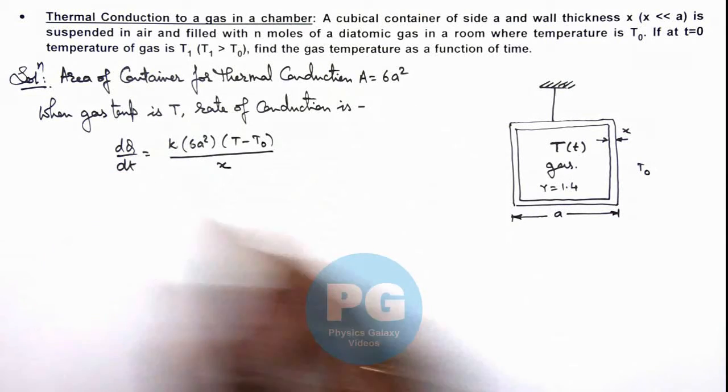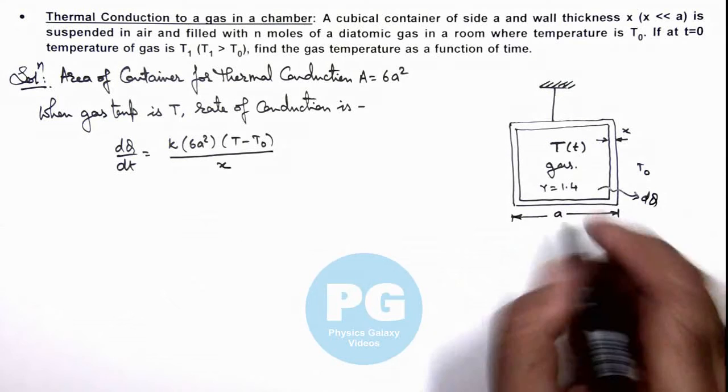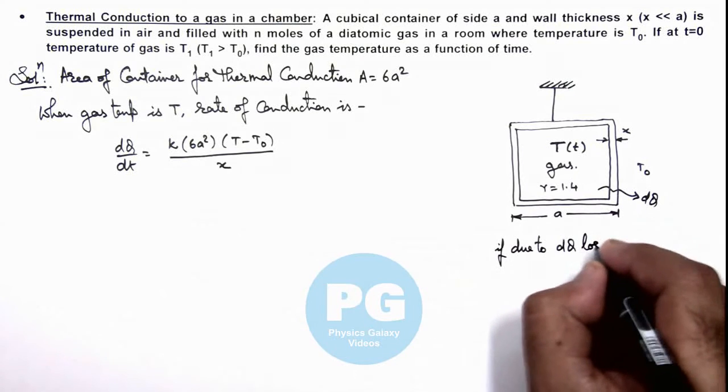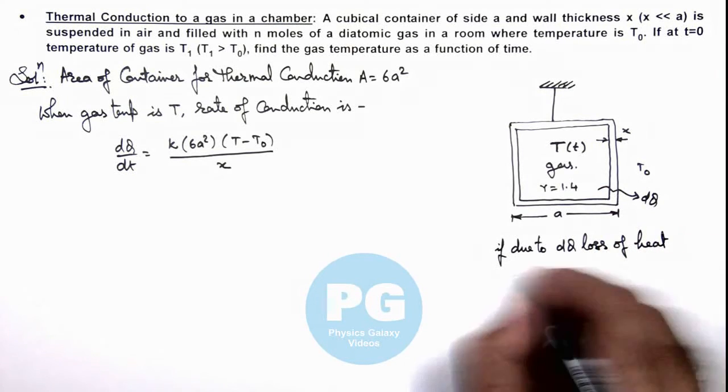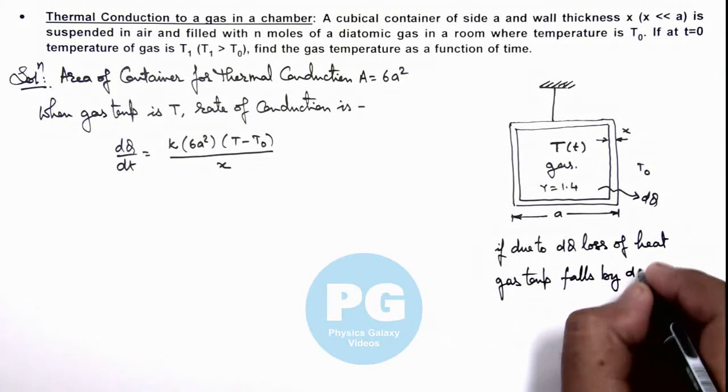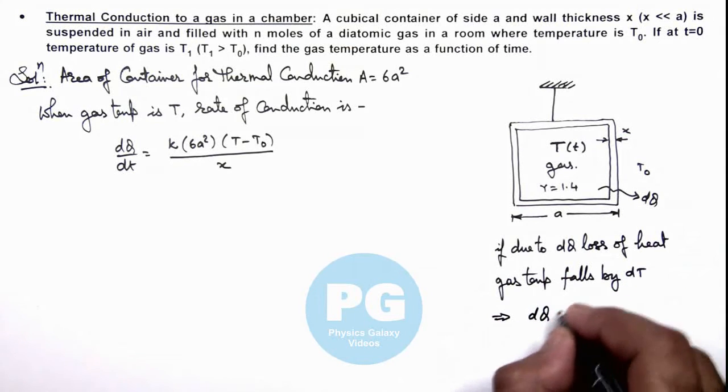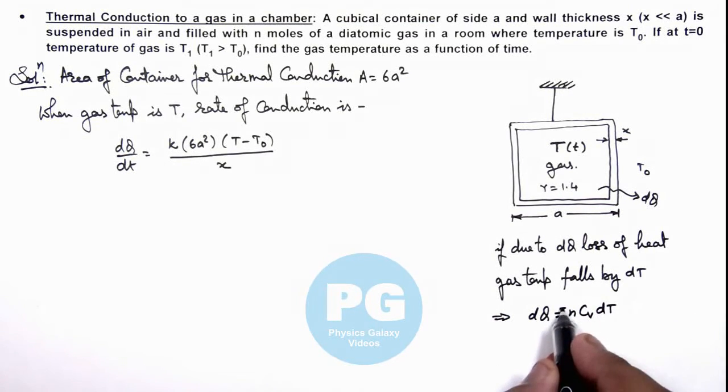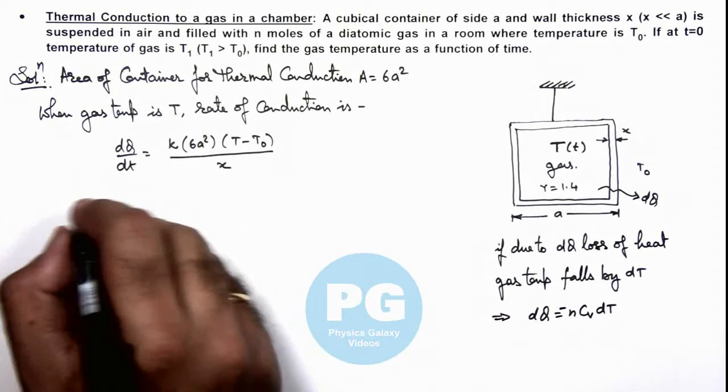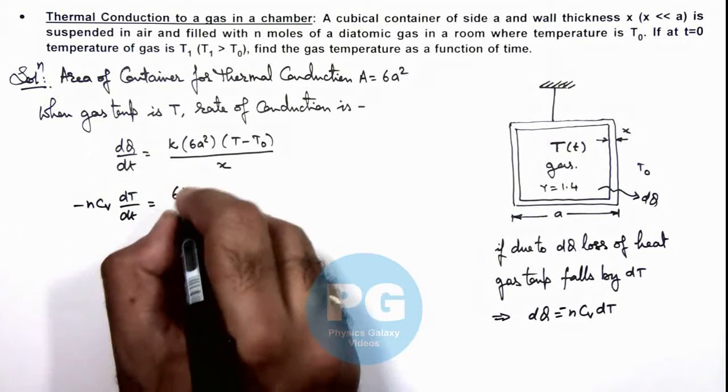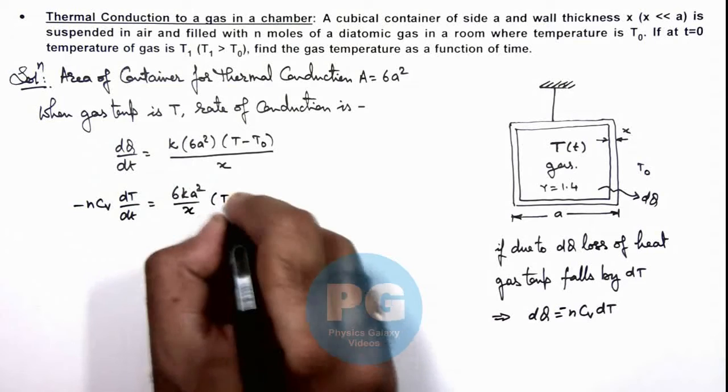And here, as dQ heat is lost by the gas to the surrounding we can write, if due to dQ loss of heat, gas temperature falls by dT, this implies here we can use dQ is equal to minus n Cᵥ dT. Here this negative sign indicates the temperature is decreasing. So in this situation we can substitute this over here, so this minus n Cᵥ dT/dt is equal to 6ka²/x multiplied by (T - T₀).